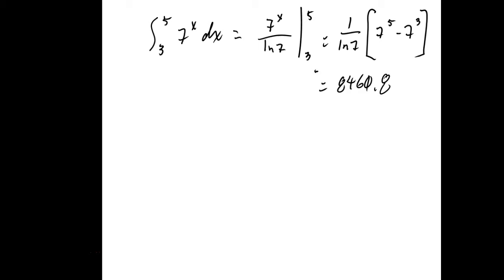Unfortunately, there are no rules to simplify that further — you just evaluate. 7 raised to the 5th minus 7 raised to the 3rd, divided by ln 7. I'm going to do that on the calculator. The answer is approximately 8460.8, which is what they have in the book. This is an approximate value since it's an irrational number.